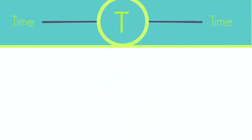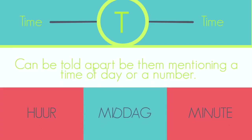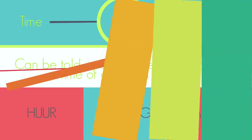T is the next letter, and it stands for Time. Time words will be placed after the first verb. You can usually tell time words apart from other words by them mentioning a time of day or a number that indicates hours or minutes. Examples of time words can be 'middag', 'more', and 'hier'.